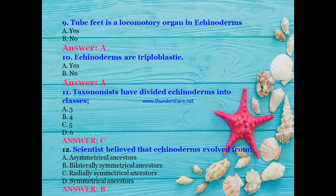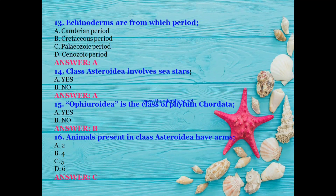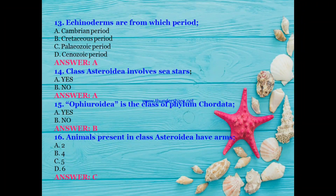Echinoderms are from which period — Cambrian, Cretaceous, Paleozoic, or Cenozoic? The answer is A — Cambrian period. Class Asteroidea involves sea stars — yes, correct. Is Ophiuroidea a class of phylum Chordata? No — echinoderms are invertebrates, not chordates. How many arms do animals in class Asteroidea have — two, four, five, or six? The answer is five.